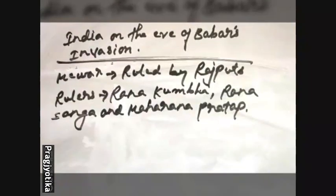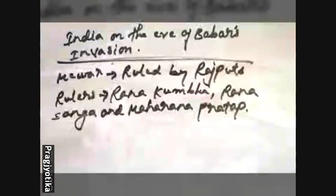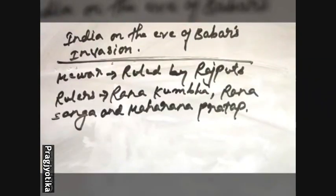Rana Kumbha took great interest in architecture. During his rule, he constructed many wells and canals and even promoted agriculture. One of his famous architectural works was the Jayastambha, that is, the Tower of Fame at Chittorgarh. The next important ruler, Rana Sangha, defeated Mahmud II, the ruler of Malwa, and imprisoned him at the fort of Chittorgarh. However, Rana Sangha lost the Battle of Khanwa to Babur in the year 1527, and that is how the Rajput kingdom also came under Babur.